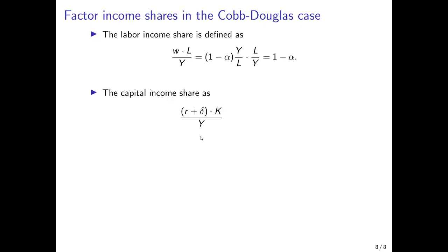The capital income share is correspondingly the rate of return on capital multiplied by the total capital stock, divided by GDP. Plugging in the rate of return on capital — alpha times Y over K — and multiplying by K over Y, the terms cancel and we get alpha. So the capital income share is also constant and equal to alpha.